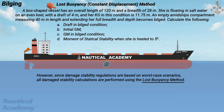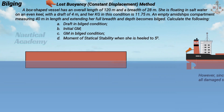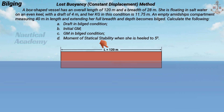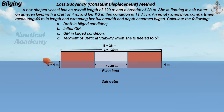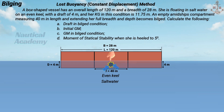Let's calculate the following using the lost buoyancy method. A box-shaped vessel has an overall length of 120 meters and a breadth of 28 meters. She is floating in salt water on an even keel with a draft of 4 meters. In this condition, the vertical distance of the ship's center of gravity from the keel (KG) is 11.75 meters. An empty amidships compartment measuring 40 meters in length and extending her full breadth and depth becomes bilged.